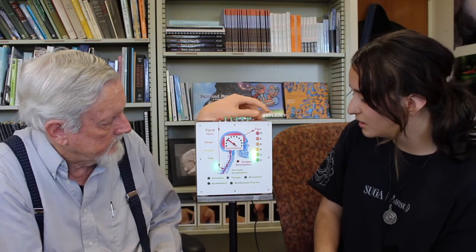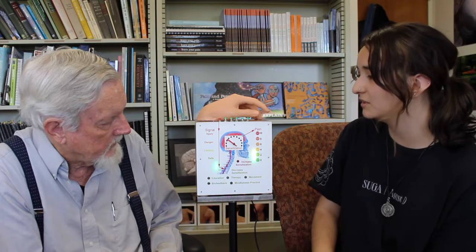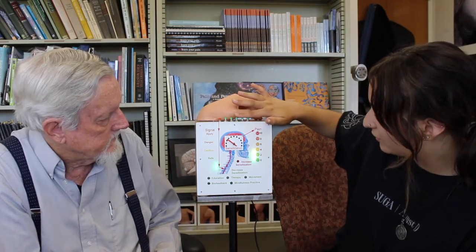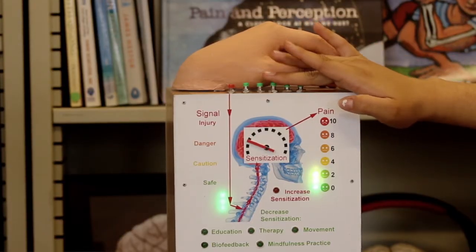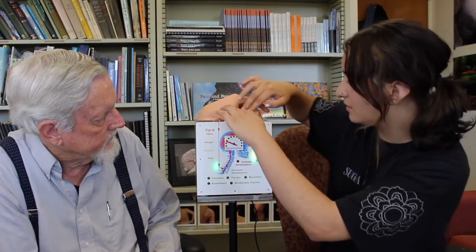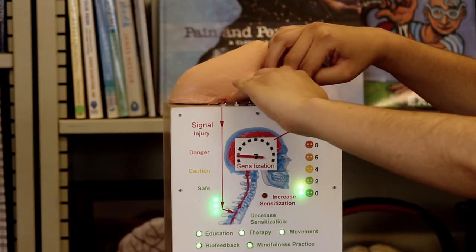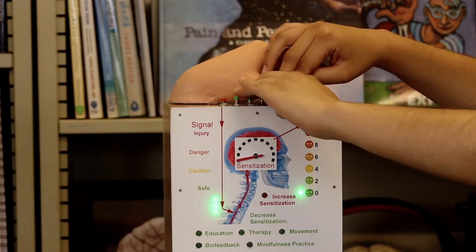What would happen if we enacted like three or two of them at the same time? Try it. I'll do movement, biofeedback, and mindfulness practice. Okay. Oh, it's going down faster now. It is. Try getting it down all the way. Click all five. All right. So now that you've brought down your sensitization, you have zero pain for safe levels of signal from the body. This is how you overcome chronic pain due to sensitization.